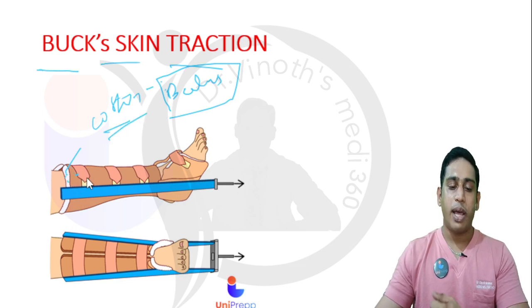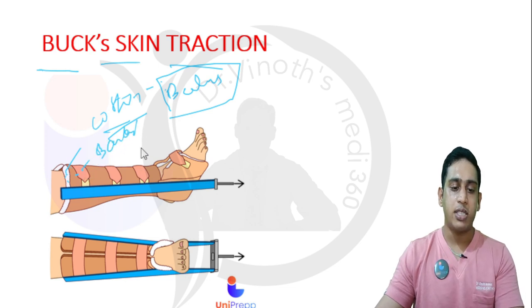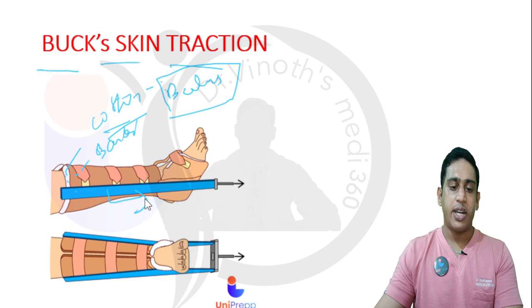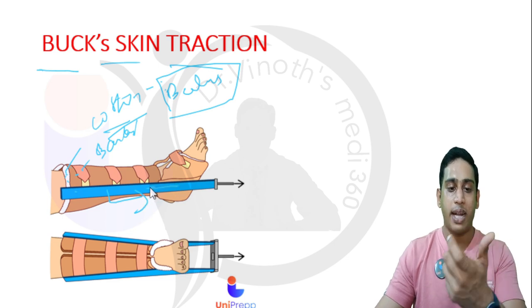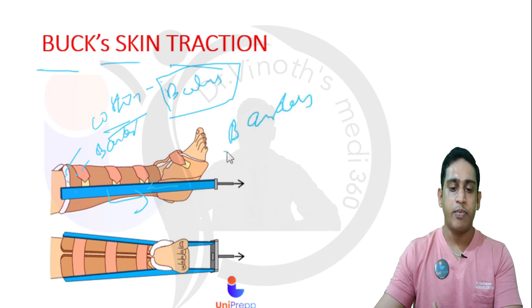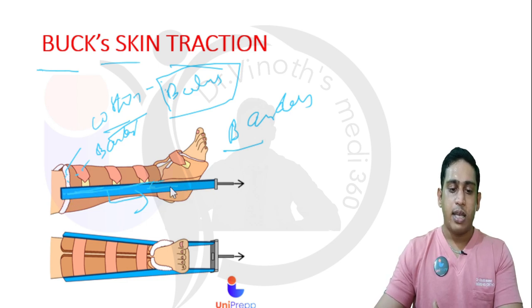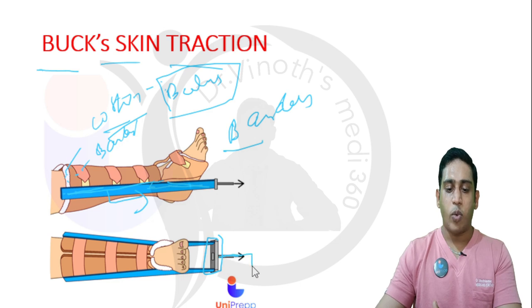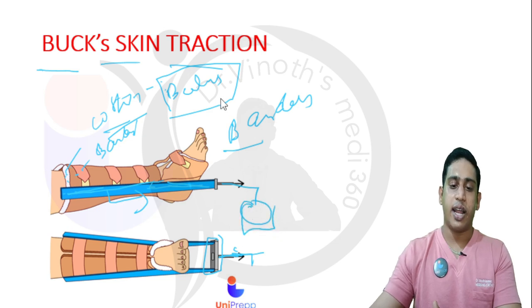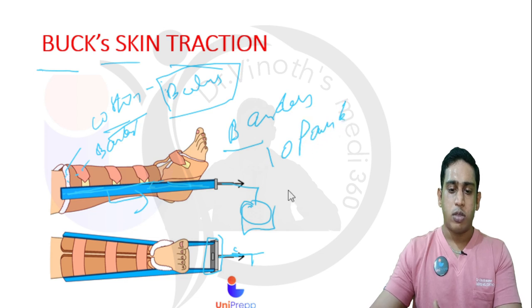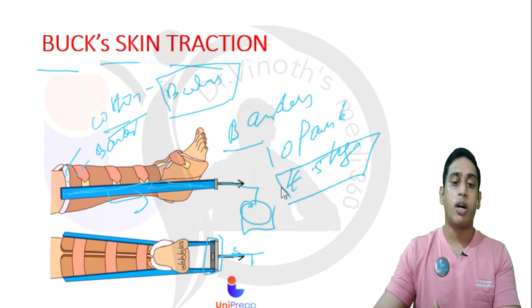Above the cotton pad we apply a crepe bandage or elastic bandage. Inside, we first apply a skin traction belt — an adhesive bandage. This adhesive tape extends from the proximal part of the leg, and the adhesive belt is attached to a small cardboard from which the traction twine comes out. That twine is suspended with weights.